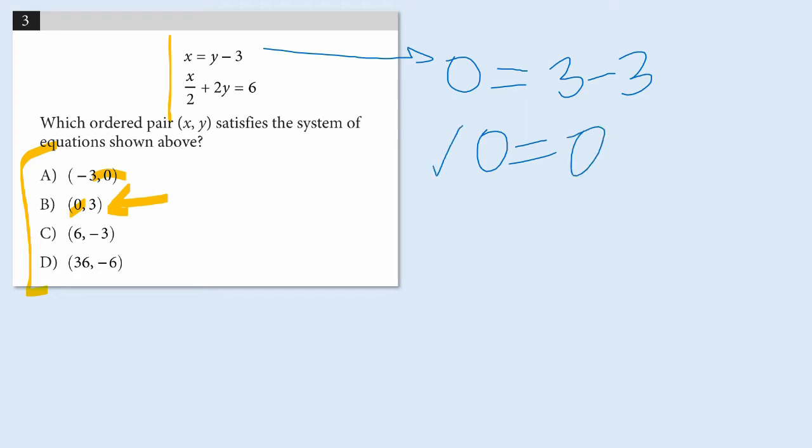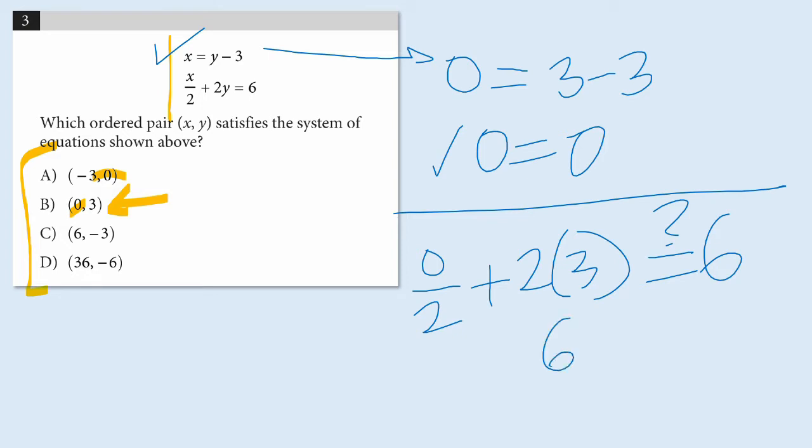So that makes the first equation true. Now let's test (0, 3) in the second equation. I would have zero over two plus two times three, and I want to know if that equals six. Well, that ends up being six on the left, two times three. And that does, in fact, equal six.